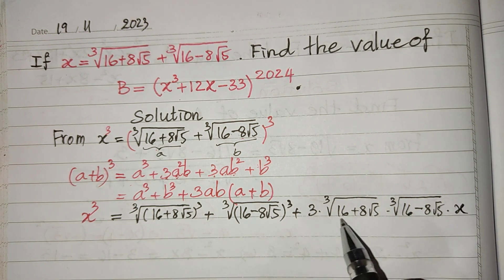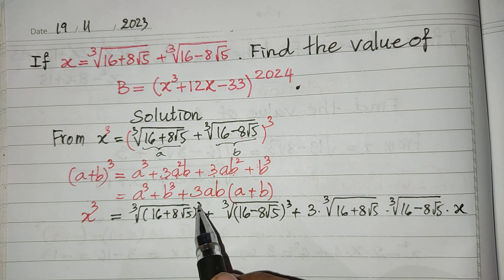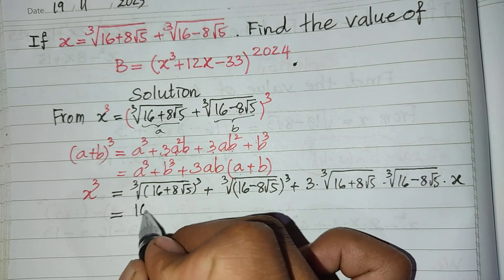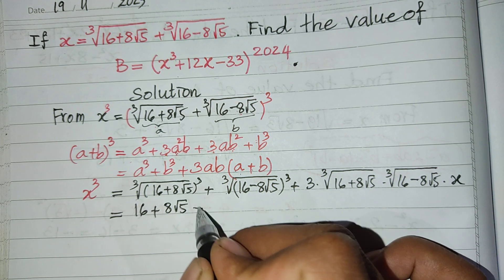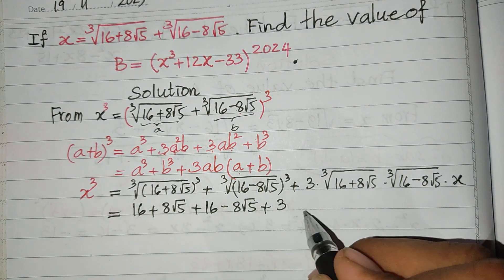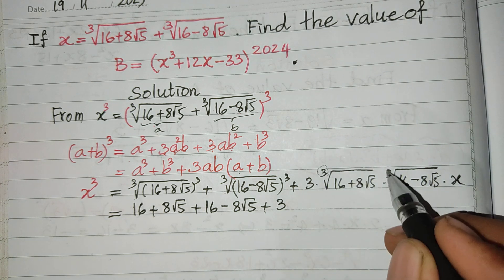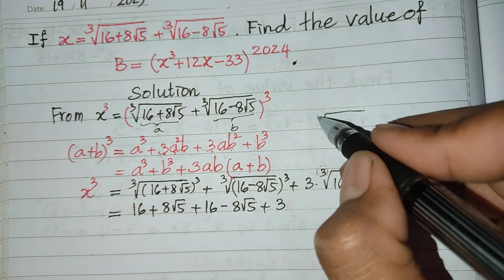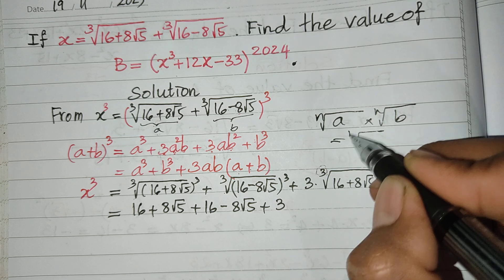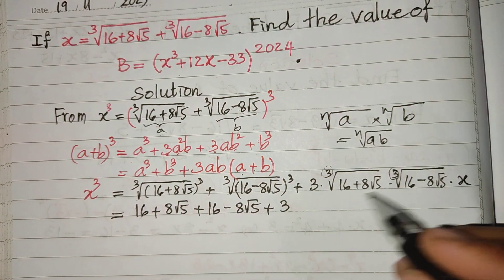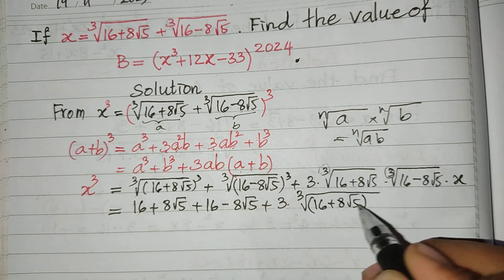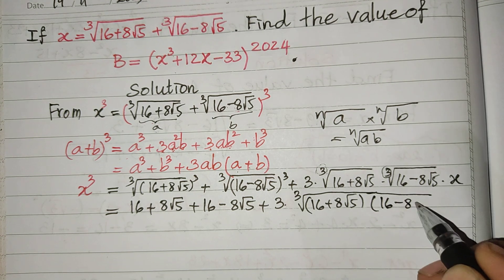We see that the cube root and the power 3 cancel each other. So this becomes (16 + h√5) + (16 − h√5) + 3 × cube root of [(16 + h√5)(16 − h√5)] × h. Using the property that the product under the same index root can be combined, we get cube root of [(16 + h√5)(16 − h√5)].